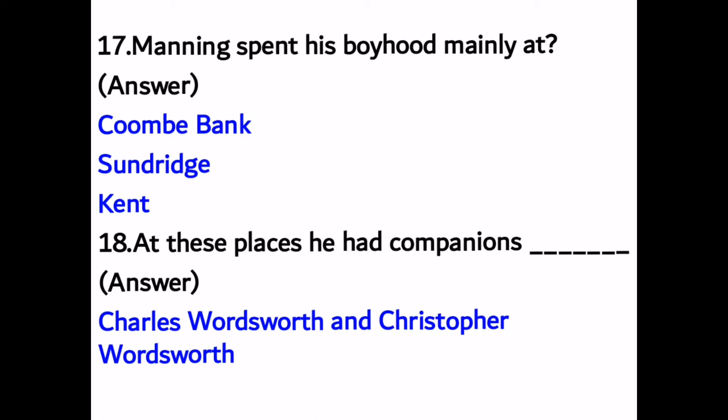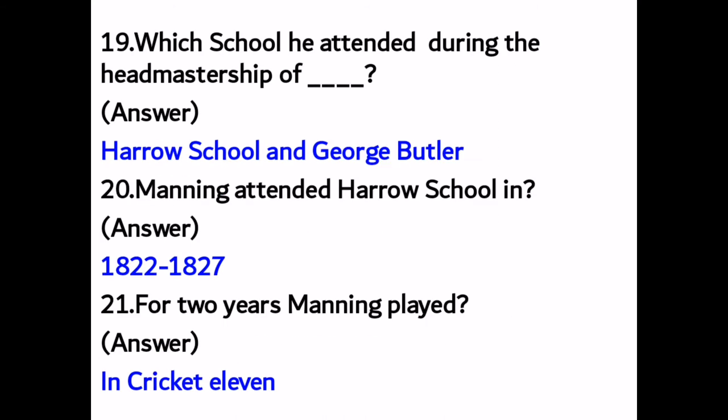Number seventeen: Manning spent his boyhood mainly at Combebank in Sundridge and then Kent. Number eighteen: at these places his companions were Charles Wordsworth and Christopher Wordsworth.